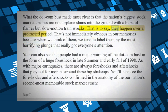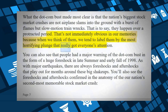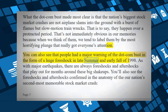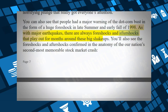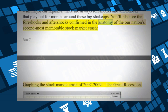That is to say, these crashes happen over a protracted period. That's not immediately obvious in our memories because we tend to label them by the most horrifying plunge that got everyone's attention. People also had a major warning of the dot-com bust in the form of a huge foreshock in late summer and early fall of 1998. As with major earthquakes, there are always foreshocks and aftershocks that play out for months around these big shake-ups.